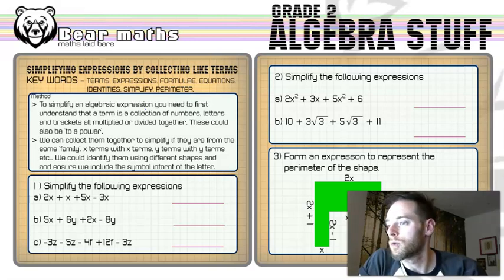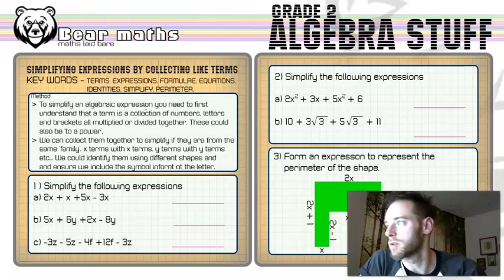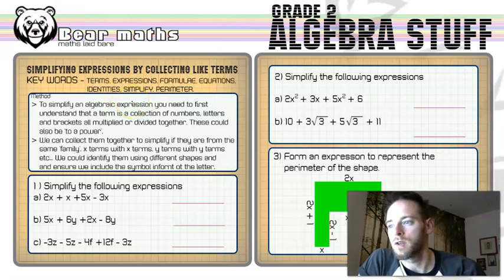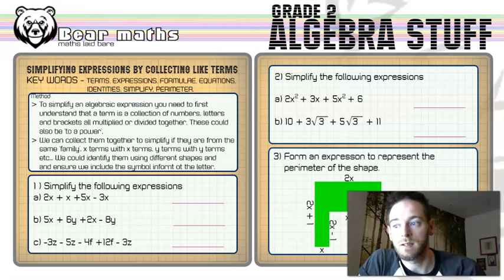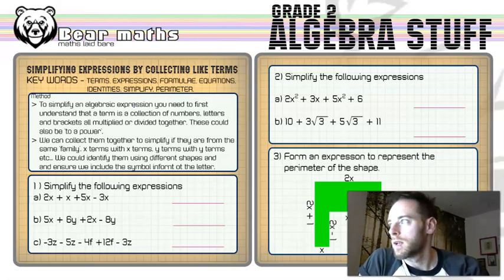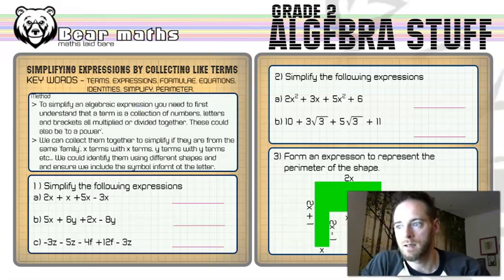An equation is an expression equal to a number or another expression which we'll be able to solve. And then identities — identities are something you would describe as stronger than an equation. It's another way of writing the same expression, basically. So you write an expression out one way, you can write it out in a different way, and you can use an identity to explain that one thing is exactly the same as the other. In this particular video, we only need to understand simplifying. When you simplify something, you are making it easier to understand — making it smaller in some way.